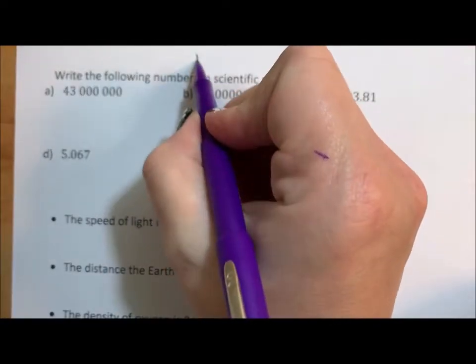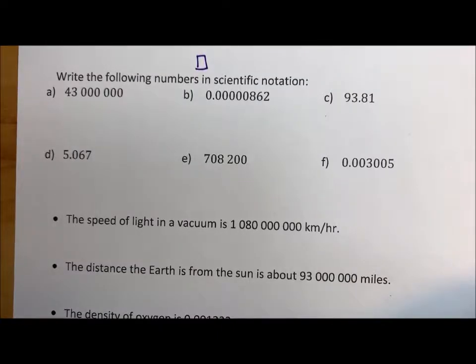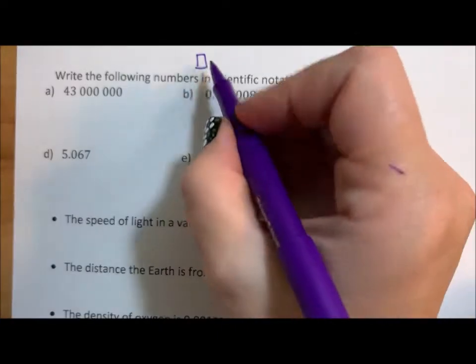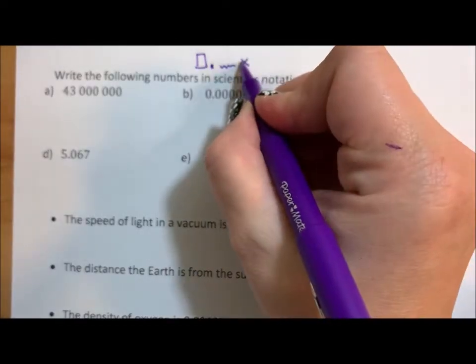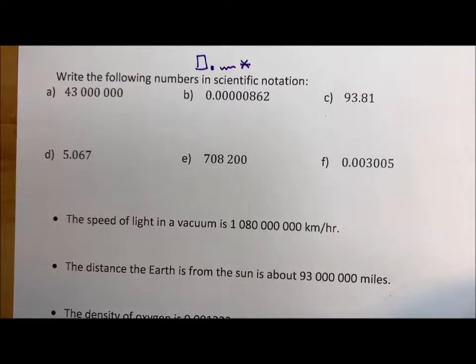Scientific notation means you take one number, that number is one through nine, single digit, then a decimal point, and then however many other numbers you need to write, then an x. Scientific notation still uses that x. Usually in math I say don't use an x for multiplication because x is a variable, but in scientific notation we still use an x. If you don't want to use that x, then use an asterisk, but don't use a dot because we already have a decimal point.